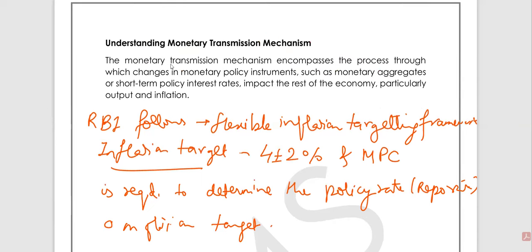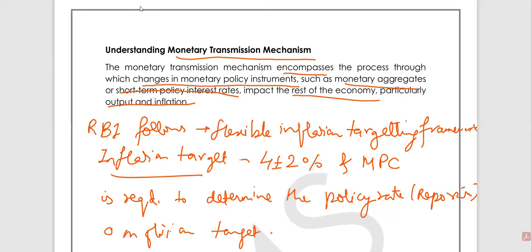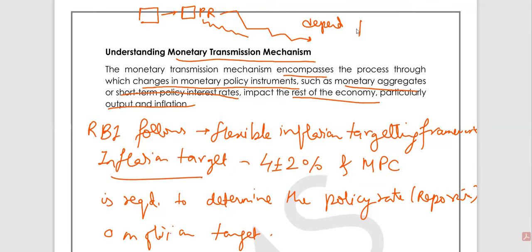So what is monetary transmission? It encompasses the process through which changes in monetary policy instruments, such as money aggregates or short-term policy interest rates, impact the rest of the economy, particularly output and prices. Basically, at the RBI level they are changing some policy rates, and due to changes in this policy rate the overall functioning of the economy is impacted, because this policy rate will be trickling down and changing financial parameters of the other variables in the economy.